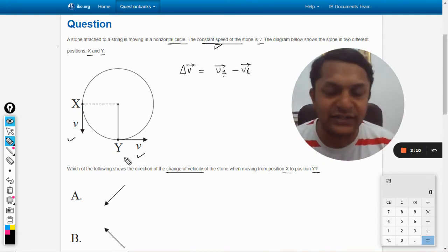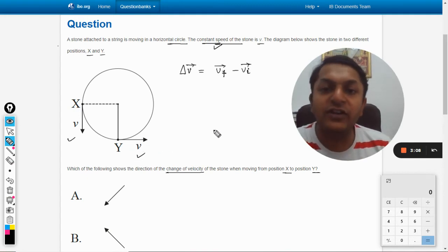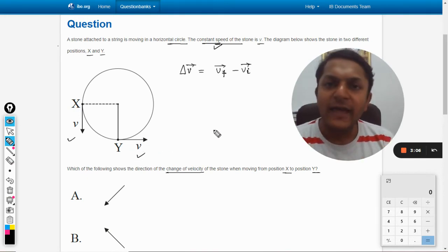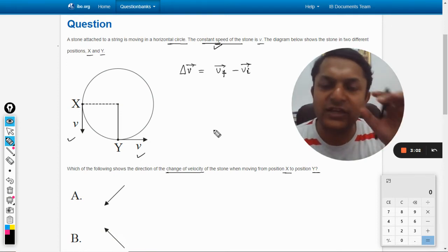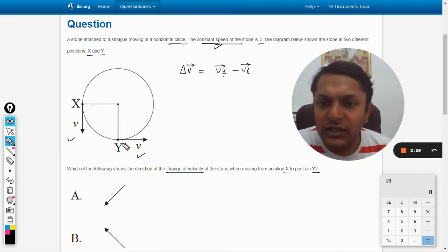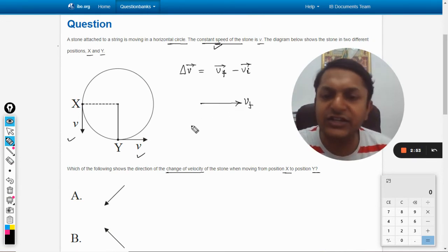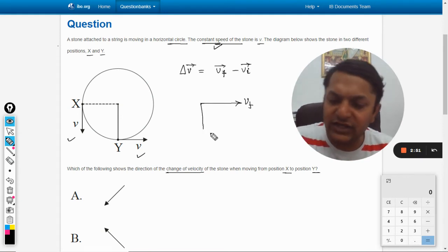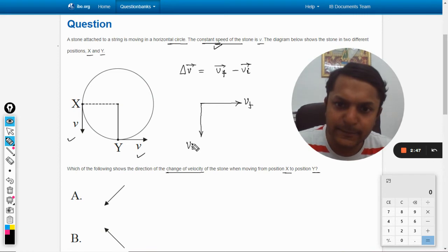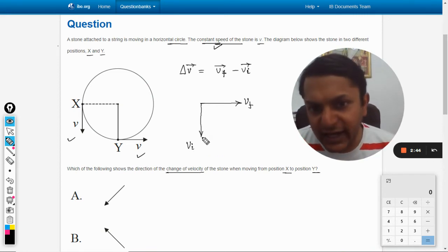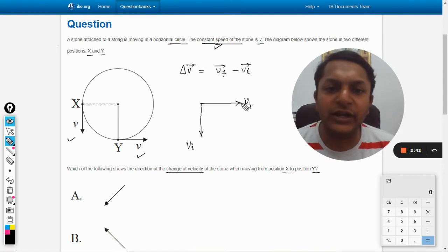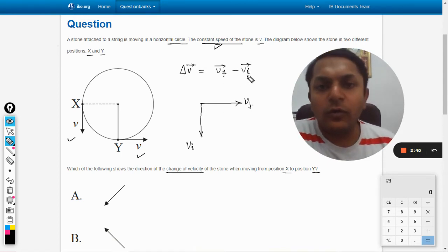But how do we do this now? We have learned in a couple of other questions how to subtract two vectors. First of all, we will redraw the two vectors in such a way that they are connected to each other with their tails, not with the head. So this is the final velocity vector I have drawn. I am writing it vf. This is the initial point and v initial will be this.